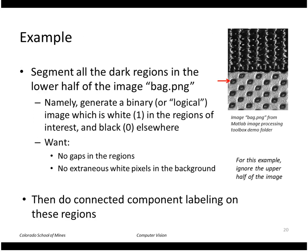So let's do an example. Let's say I have this image bag.png and I'm interested in finding or segmenting out these dark regions here. And so I'll do thresholding and then I'll do these morphological operators to clean that up.